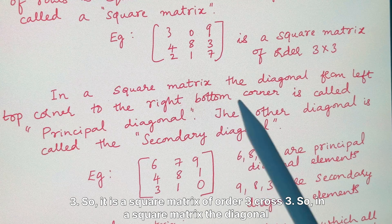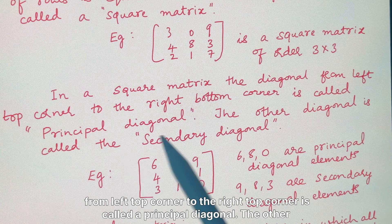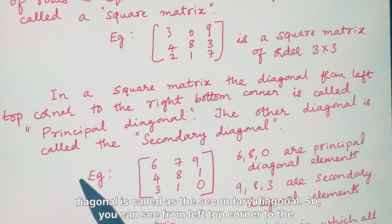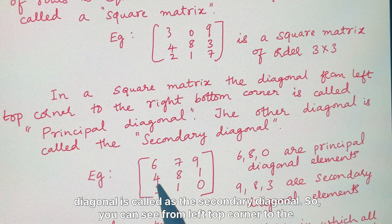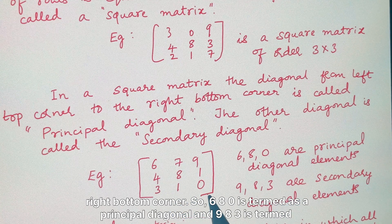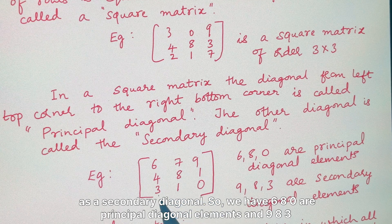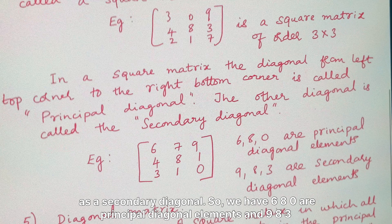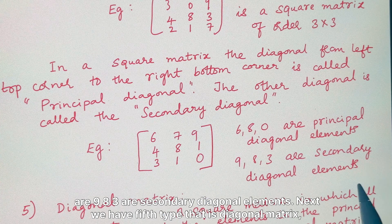In a square matrix, the diagonal from the top-left corner to the bottom-right corner is called the principal diagonal, and the other diagonal is called the secondary diagonal. Here, 6 8 0 are the principal diagonal elements, and 9 8 3 are the secondary diagonal elements.